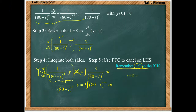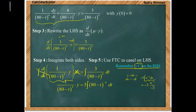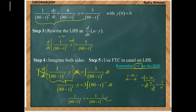For the right-side integral, we use u-substitution with u = 80 − t, du = −dt. We get negative 3 times the integral of u^(−4), which gives u^(−3)/(−3). The two negative threes cancel, leaving positive 1/u^3, so the result is 1/(80 − t)^3 plus C.